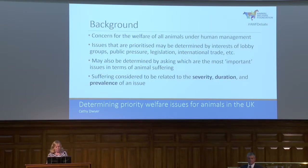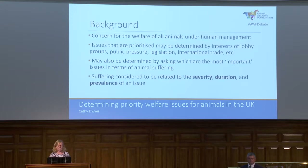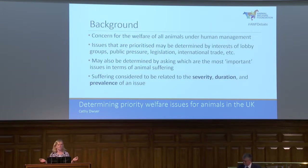Suffering is often considered to be related to the severity of any welfare compromise, the duration of time for which that animal experiences it, and how prevalent that issue is. Prevalence can be considered in two ways: the number of animals in total — whether that's tens of thousands or millions — or the percentage of animals affected within a particular species.